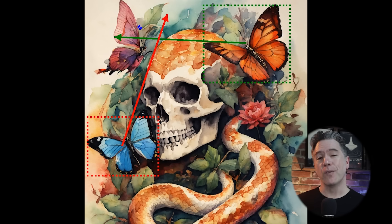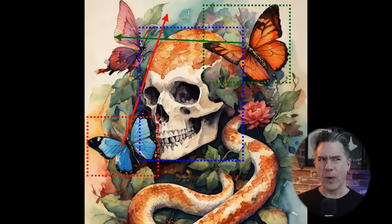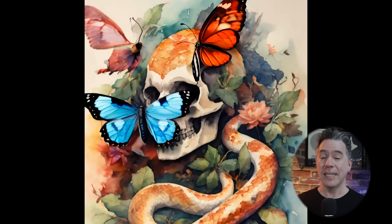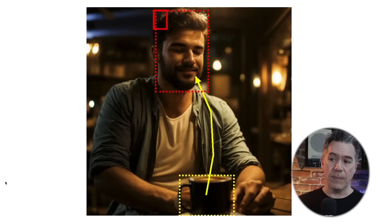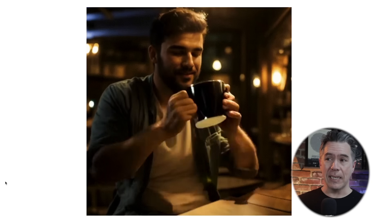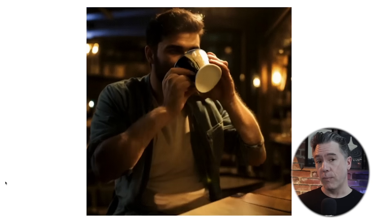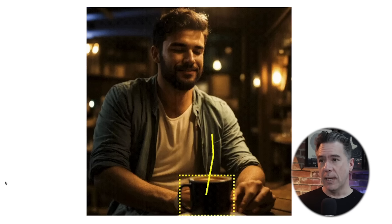It comes to us from TikTok, but there are no dancing girls in any of the examples, so thank you very much for that, TikTok. To give you a high-level view of what Boximator does: you can take a static image, draw boxes in areas, and then prompt to have motion.